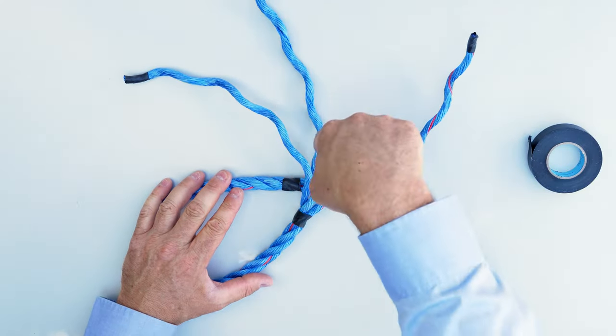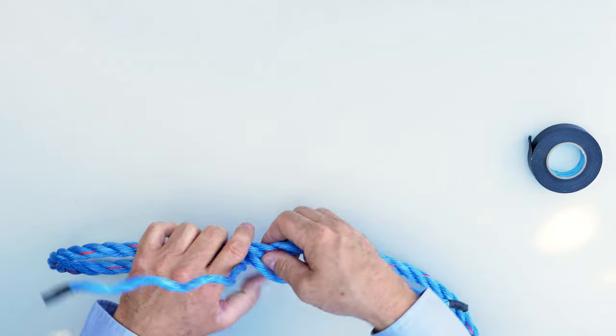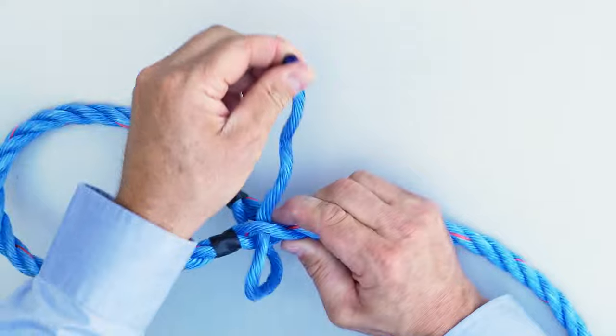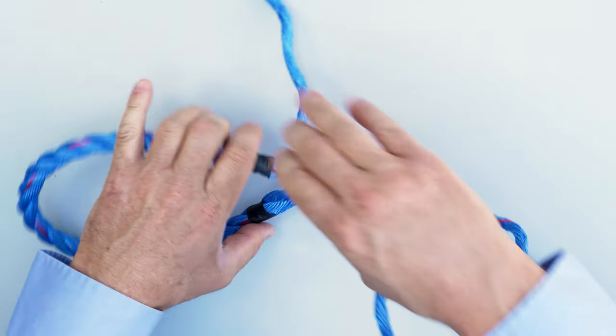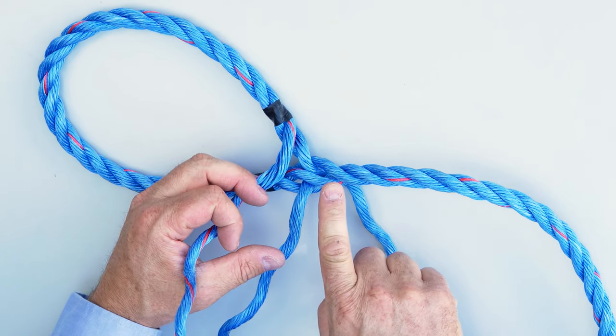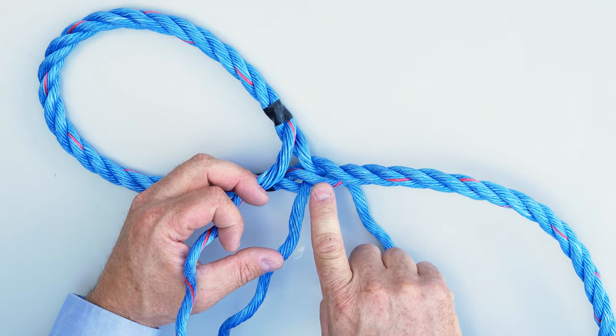Take the left hand strand and go underneath the next strand in the standing part of the rope. And then take the third strand and pass it underneath the last one that we have not gone underneath yet.